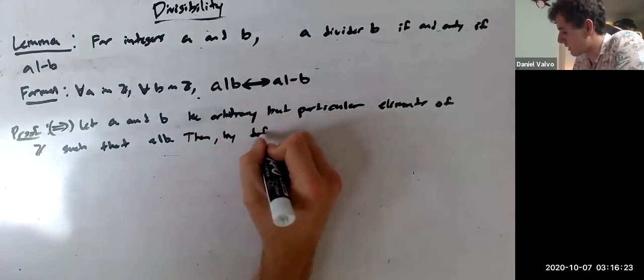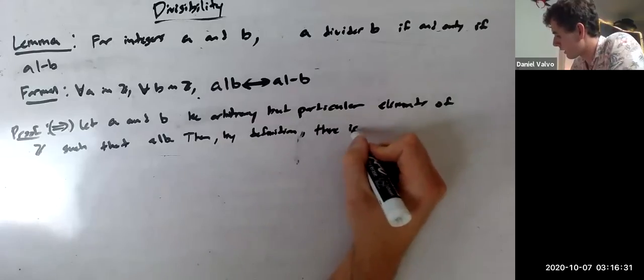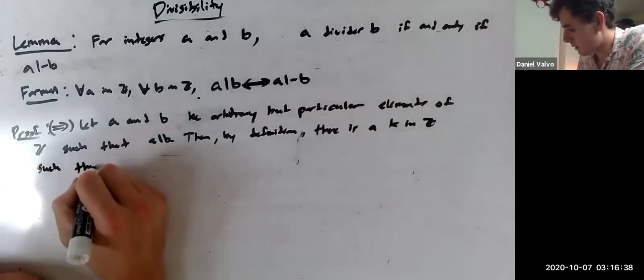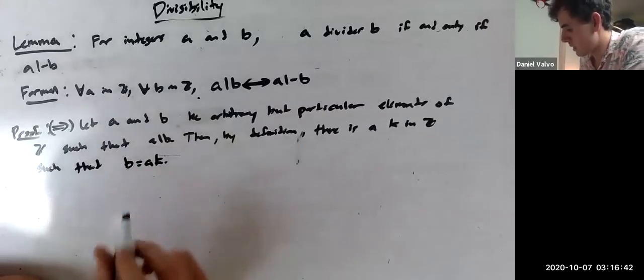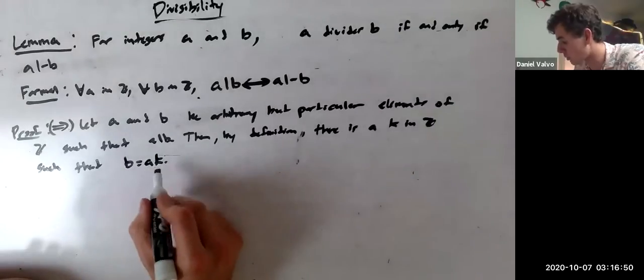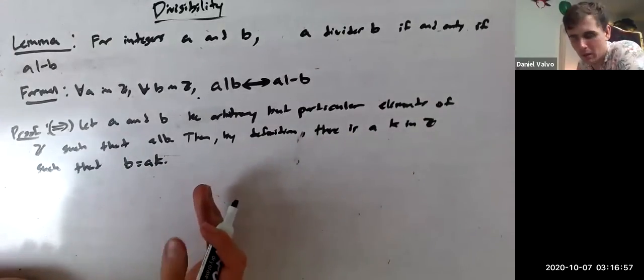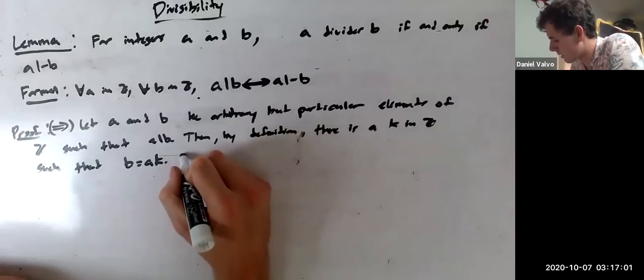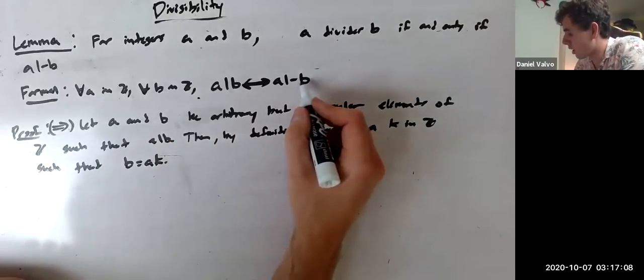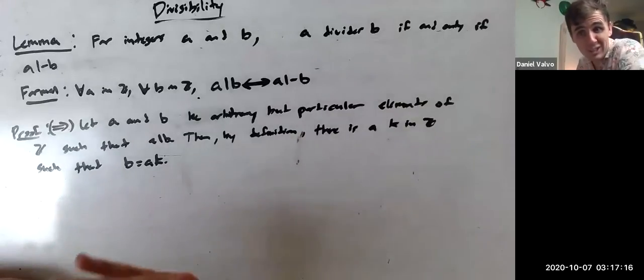I assume A divides B because in this direction I'm assuming this, I'm proving this. So then, by definition, there is a K in Z such that B equals AK. As always, that's what divides means. It means there's an integer multiple, B is an integer multiple of A, and the integer is K in this case. And then we're going to do exactly what we did in the 10-20 example. Now we're going to try to show that negative B is a multiple of A, right? Because that's what it means for A to divide negative B. That's what we want to get to. So I'm going to start with negative B and try to write it as a multiple of A.